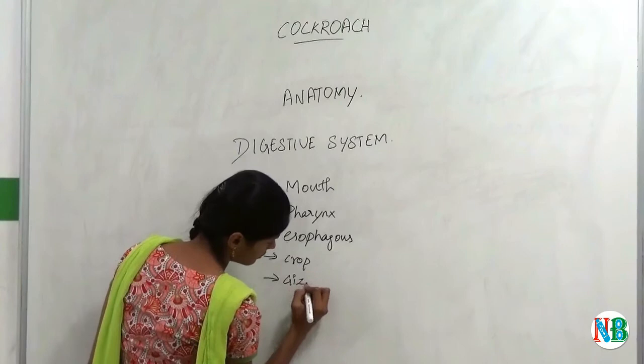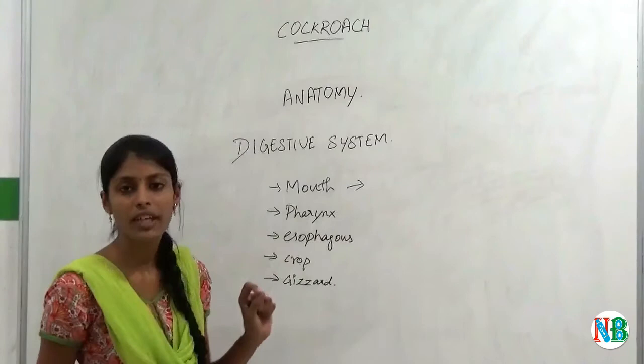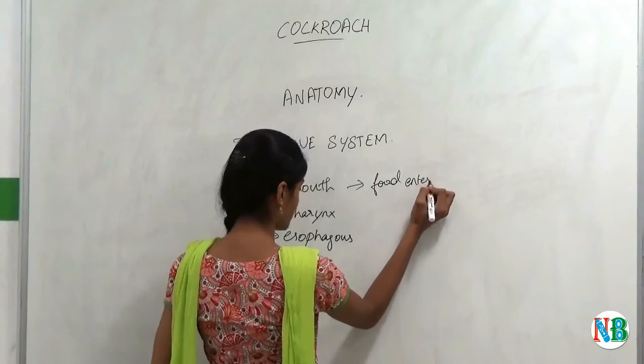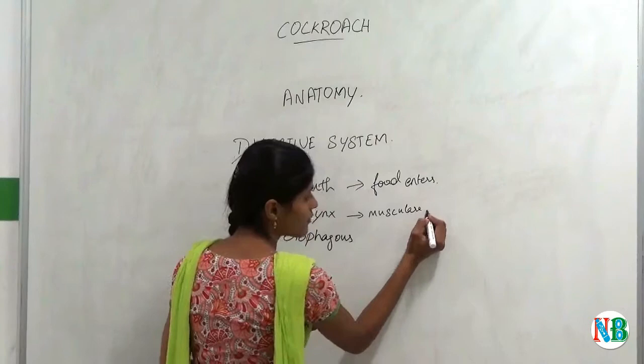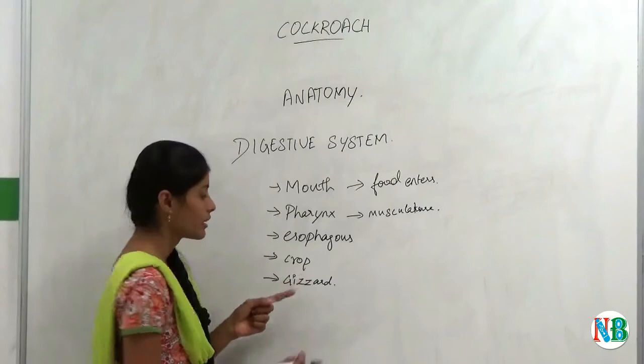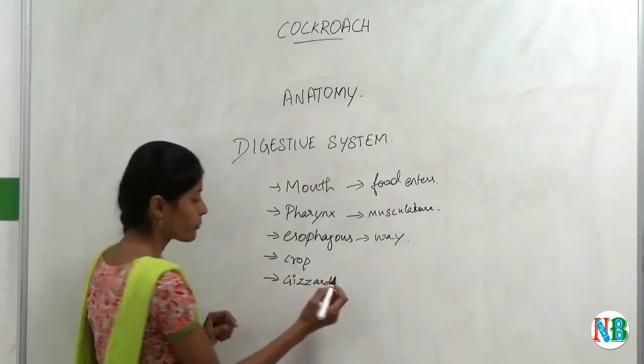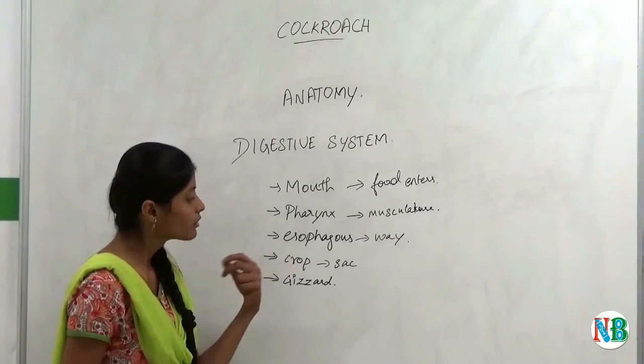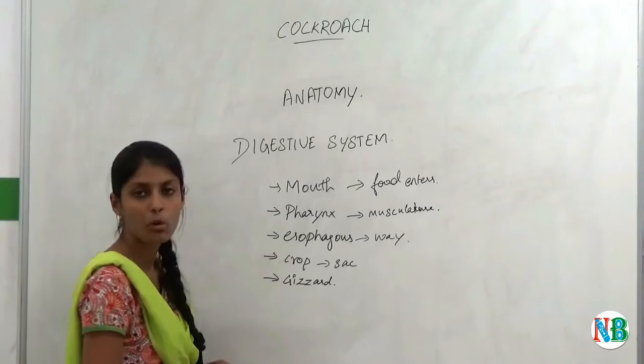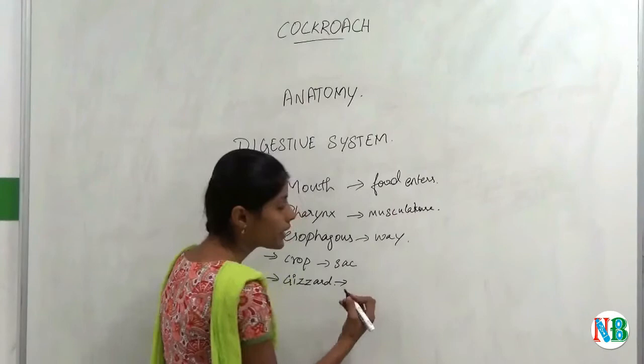In mouth, this is the place where the food enters. Pharynx acts as a pathway and it consists of musculature that helps in swallowing of food. Then esophagus, through which the food will go into the crop. Crop will look like a sac. Here the food will be stored. So large amount of food will be stored in the crop.